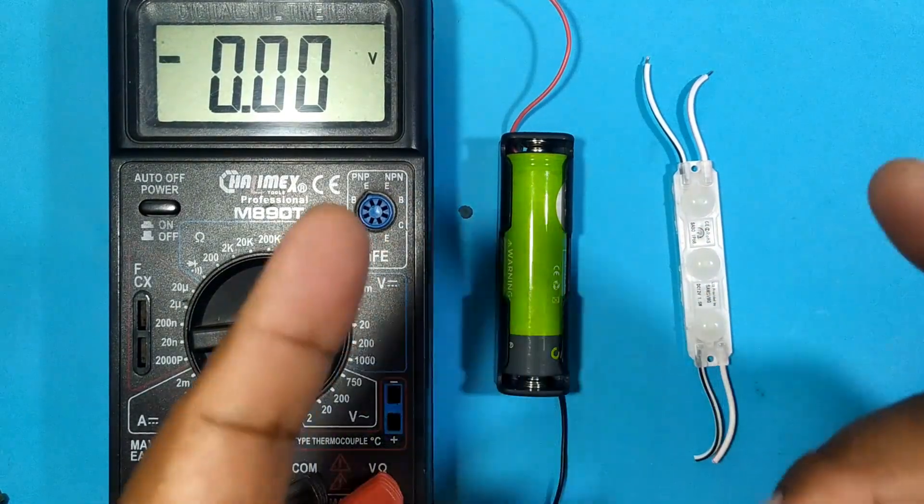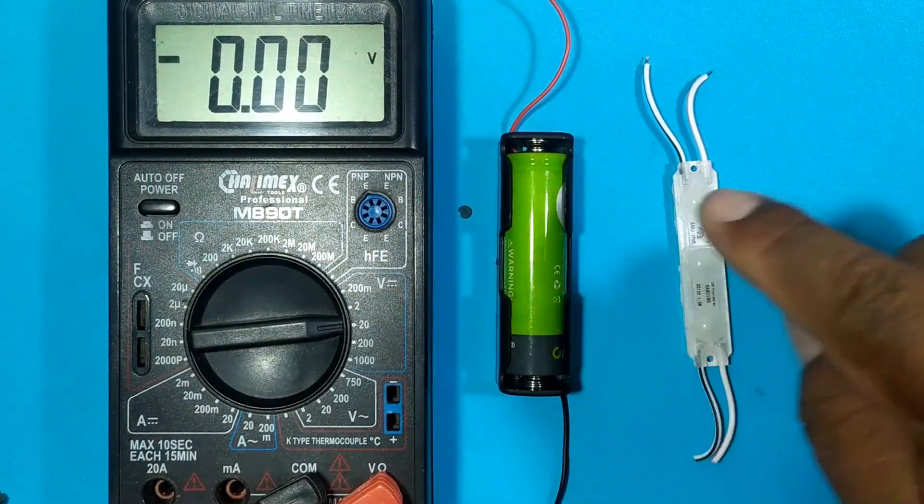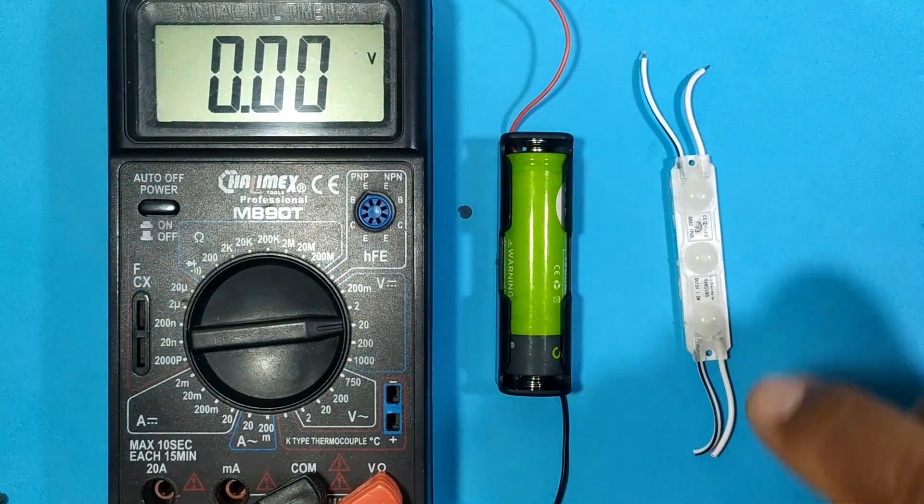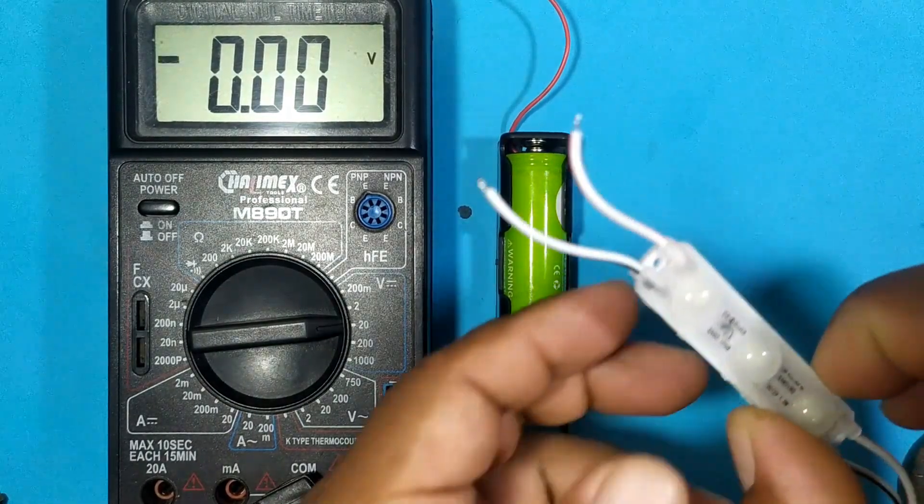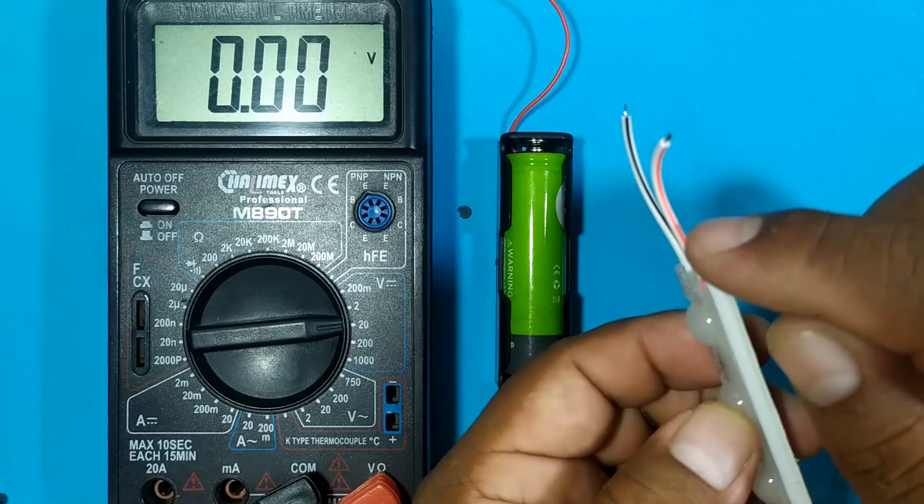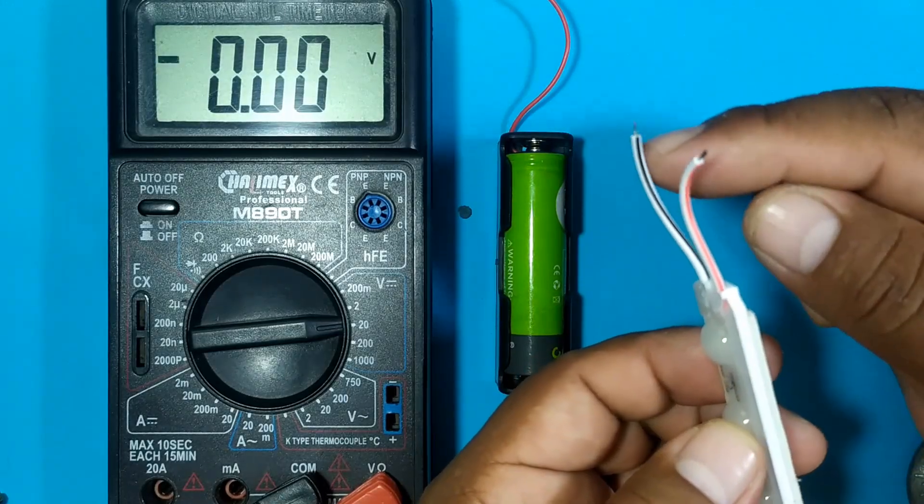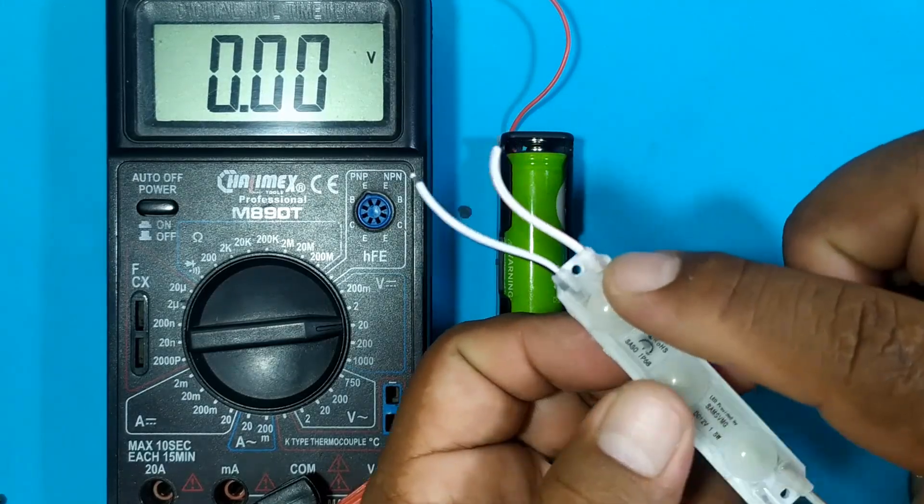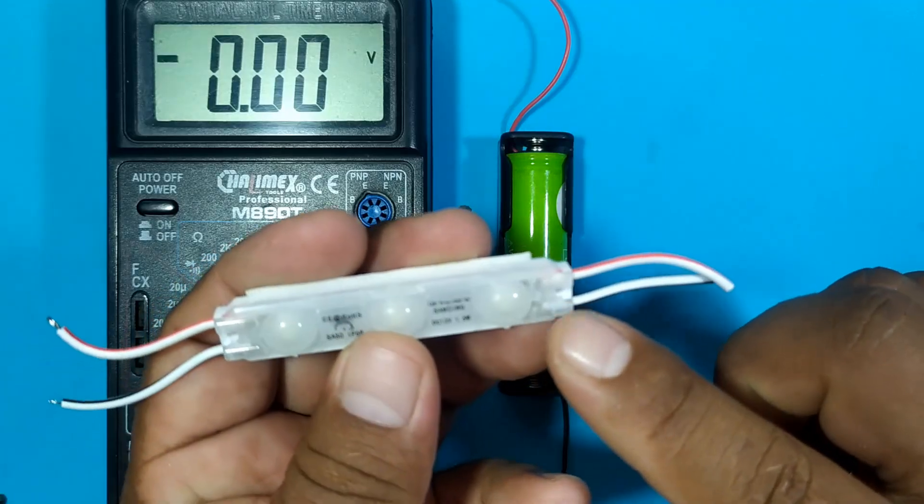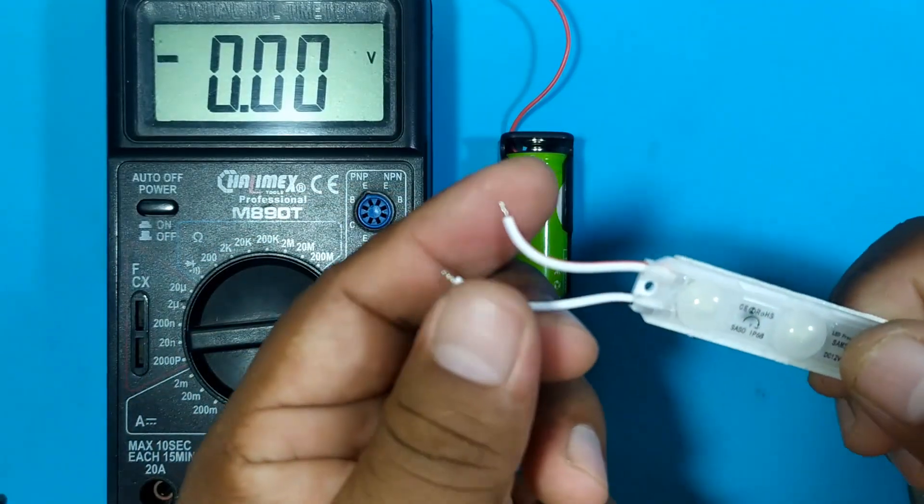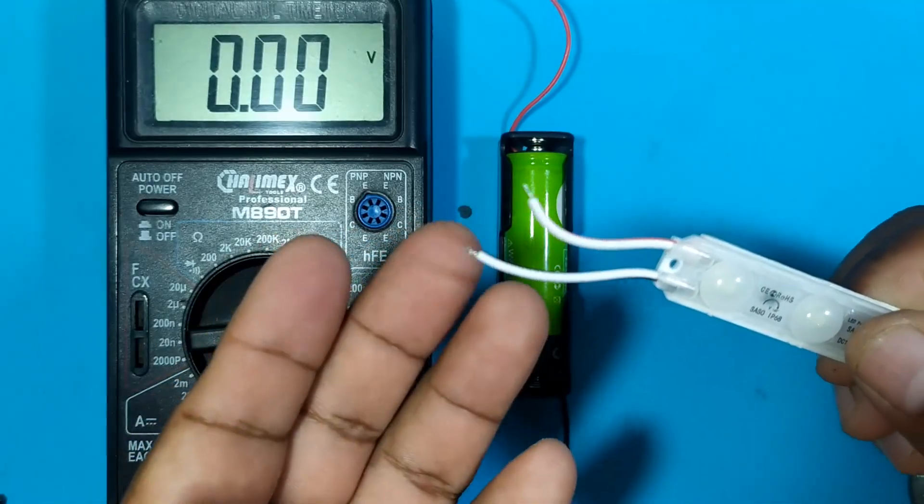Well, the first thing we are going to do is test if we can turn on the 12 volt module with the battery. The module will always have a positive and a negative, both on one end and the other. You can use this end, or this end, either one will work.